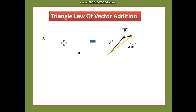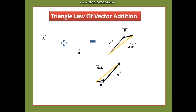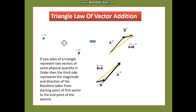You can also reverse the procedure: placing the head of one with the tail of the other gives B + A, which has the same magnitude and direction as A + B. The triangle law states: if two sides of a triangle represent two vectors of the same physical quantity in order, then the third side represents the magnitude and direction of the resultant, taken from the starting point of the first vector to the end point of the second vector.